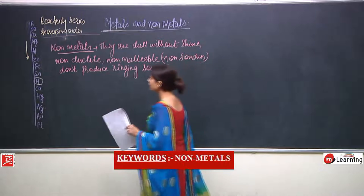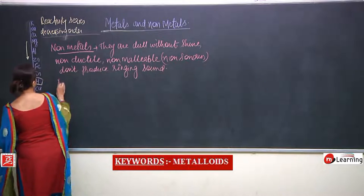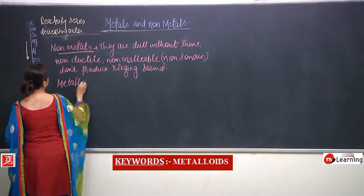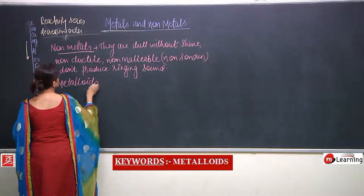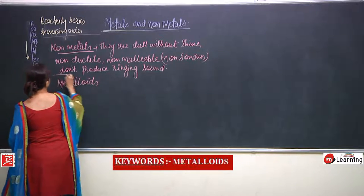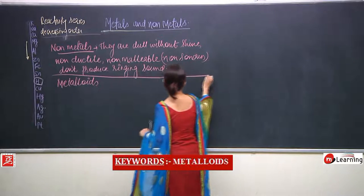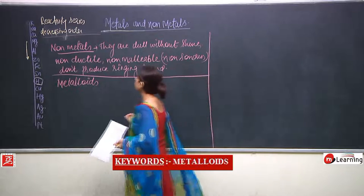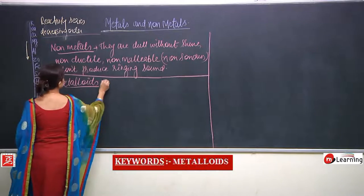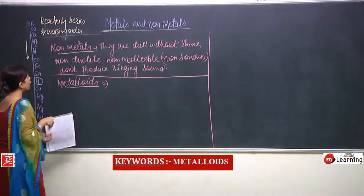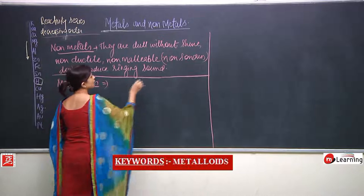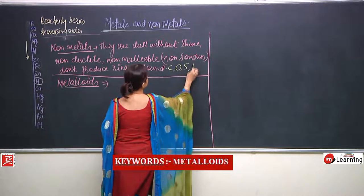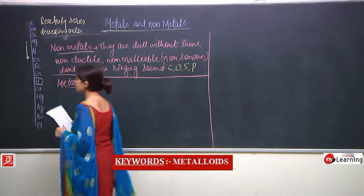Moving to the next one — metalloids. I forgot to write the examples of non-metals. Very important: examples of non-metals are carbon, oxygen, sulphur, and phosphorus.